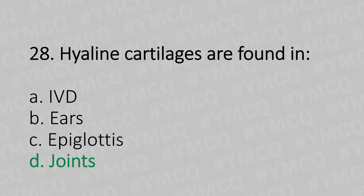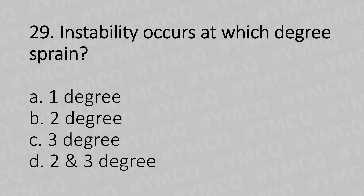Moving to our 29th question. Instability occurs at which degree of sprain? Option A: First degree sprain. Option B: Second degree sprain. Option C: Third degree sprain. Option D: Second and third degree sprain. And the answer is Option C: Third degree sprain.